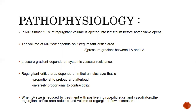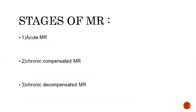The regurgitant orifice area depends on the mitral annulus size, which is proportional to preload and afterload and inversely proportional to contractility. It is also related to the timing of the murmur. When the LV size is reduced by treatment with positive inotropes, diuretics, and vasodilators, the regurgitant orifice area is reduced and the volume of regurgitation decreases.